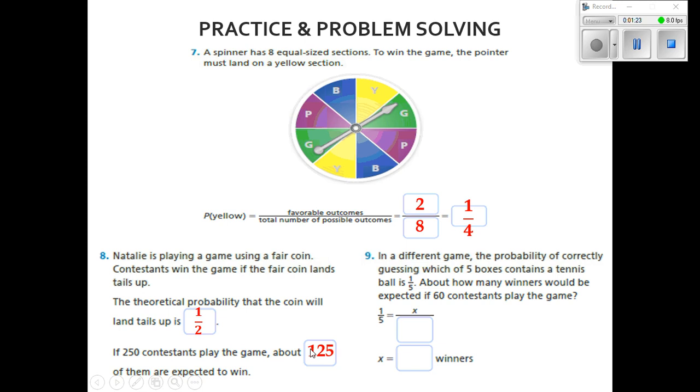If 250 contestants play the game, about 125 of them are expected to win. Why is it 125? Remember we're talking about 250 divided by two. One half of 250 is going to be 125.